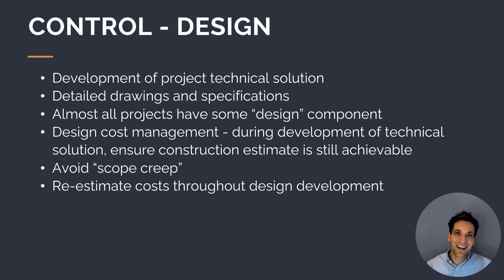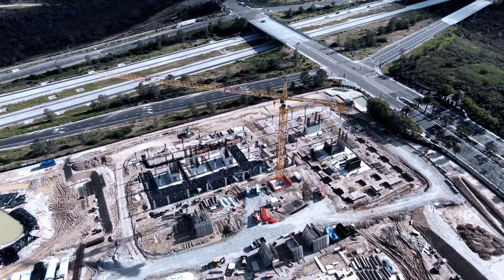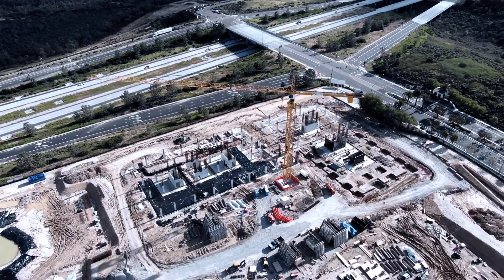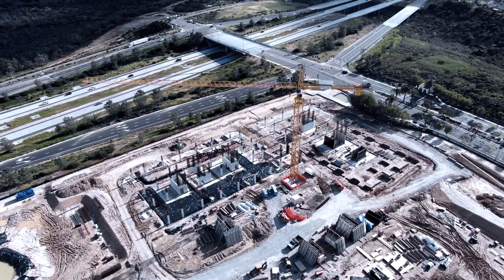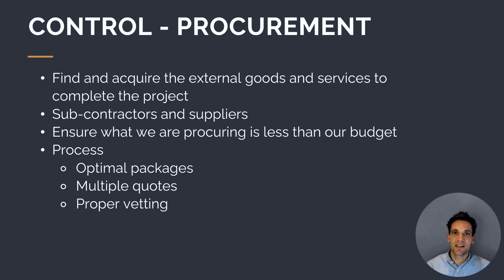The other thing that happens during the pre-construction phase with a massive impact on total project cost is procurement — the process of finding and acquiring the external goods and services we need to complete the project. We want to manage the procurement process so we're finding the best possible subcontractors and suppliers at the best possible cost. One of the biggest ways we can save money on a project is by finding high quality subcontractors and suppliers through competitive tender processes, securing the best possible subcontractors and suppliers at the lowest possible cost.